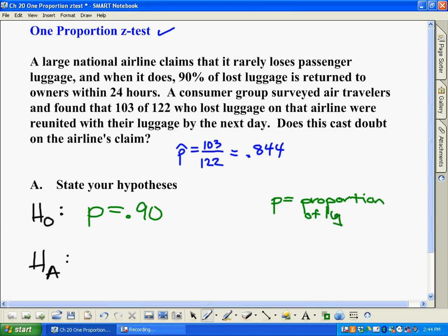luggage returned. Now our alternate hypothesis is, in order for us to cast doubt on the claim, it has to be lower than. If it's higher, that's not going to be a big difference because that means it's at least 90%, but lower is where we're going to have a problem. So our alternate hypothesis is P is less than 90%. So those are your hypotheses.